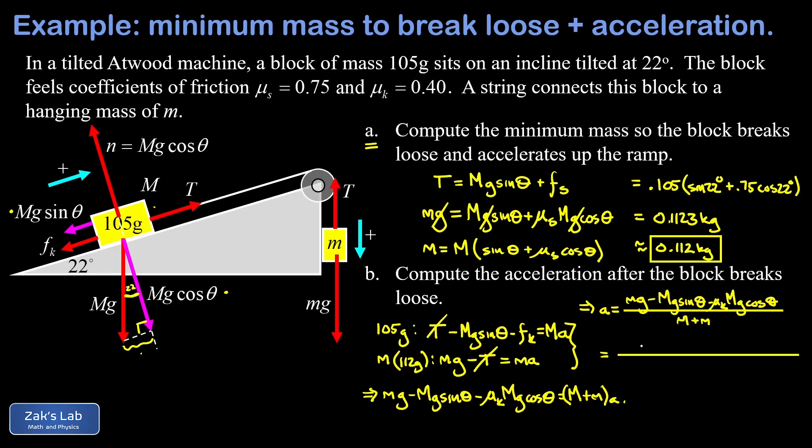So now we just have to plug in all these numbers, and I'm going to keep a little extra precision on the hanging mass. So that's 0.1123 kilograms, G is 9.8, minus 0.105 G sine of 22 minus 0.4 times 0.105 times 9.8 for G times the cosine of 22, barely making it onto the edge of the screen, and then divided by the sum of the two masses.